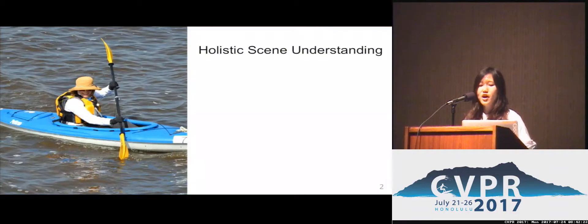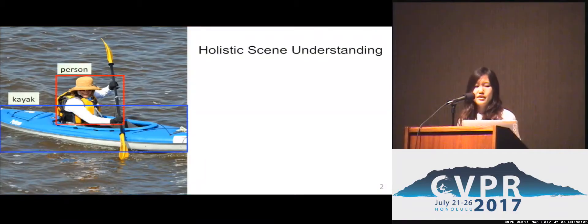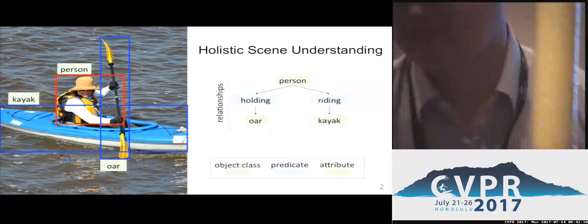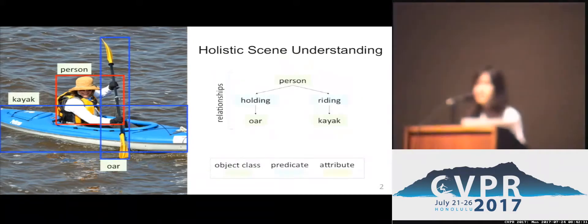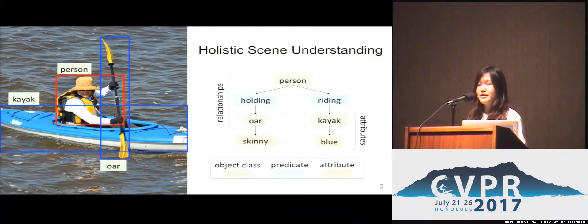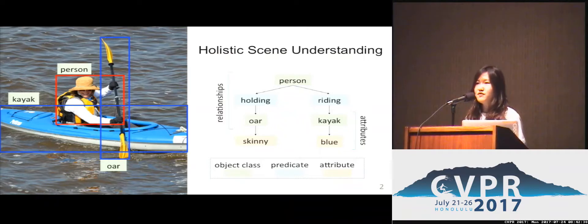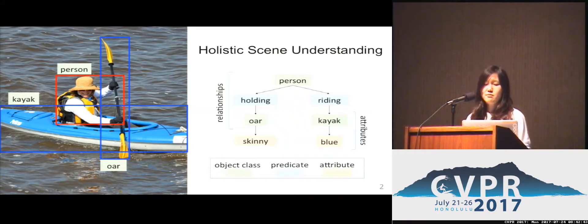Prior art can detect the objects in an image such as person, kayak, and oar, but it fails to establish a relationship among them — like the fact that the person is holding an oar — or describe attributes like the kayak is blue. Being able to extract such visual information would benefit many real-world applications such as image search and question answering.